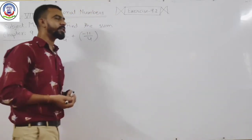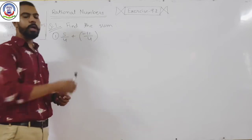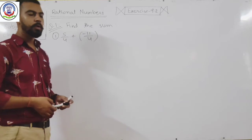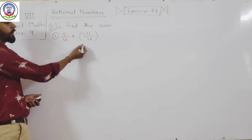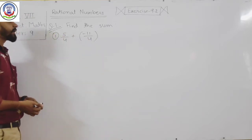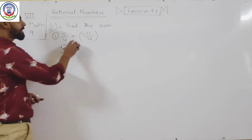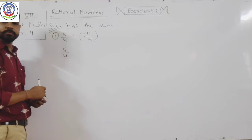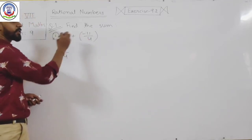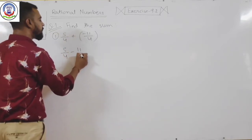For addition and subtraction, the denominator should be equal. Here the denominator is 4 and here also 4, that means the denominator is equal. So you will write 5 upon 4, and you can see that there are two signs — plus and minus — and outside the bracket there is a sign, so plus minus will be minus 11 upon 4.